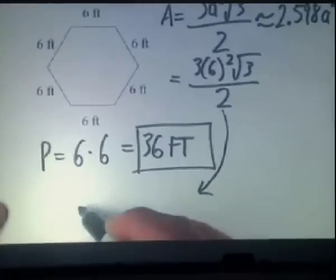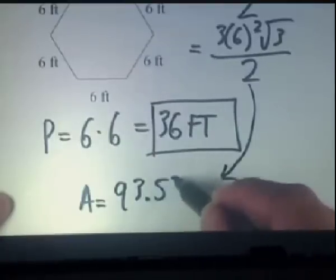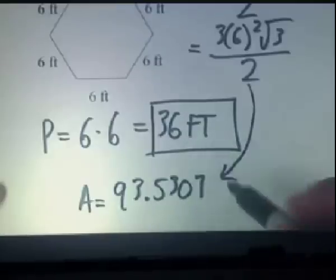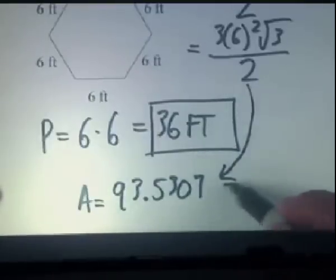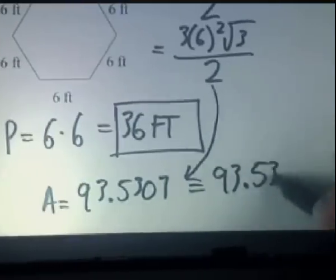we get a value, again talking in terms of the area, of 93.5307 approximately. Let's round that off to about 3 decimal places. So for our answer, we'll take 93.531.